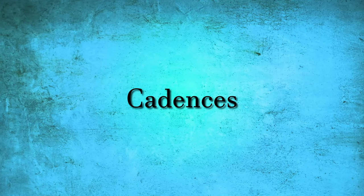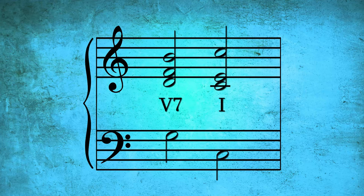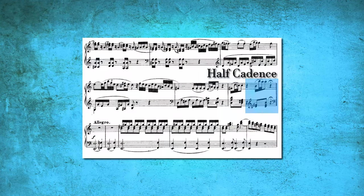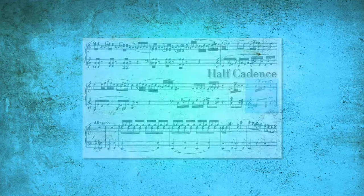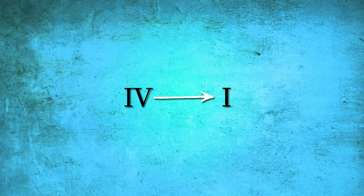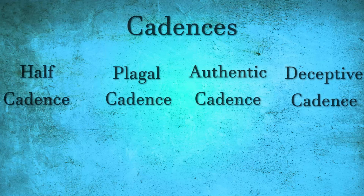A cadence is a musical punctuation mark or endpoint that signifies the completion of a musical phrase or section. It is like a musical full stop or comma, indicating a temporary or final resting point in the music. Cadences are formed by specific chord progressions that create a sense of closure, often providing a satisfying resolution to the listener's ear.